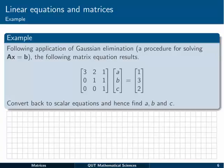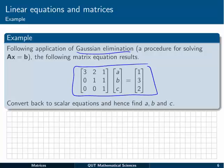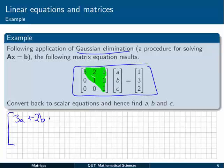There's a procedure for solving Ax equals b called Gaussian elimination, after the mathematician Gauss. Following an application of this process, a particular matrix results. We can see that we've got an upper triangular coefficient matrix — it looks like a triangle in the upper part of that matrix. We can then convert that back to scalar equations, and find a, b, and c quite easily. Doing the matrix multiplication on the left-hand side — going across the row and down the column — we have 3a plus 2b plus 1c, then 0a plus 1b plus 1c, and finally just 1c. That matrix equals 1, 3, 2.